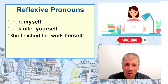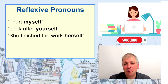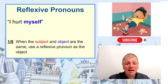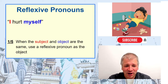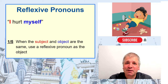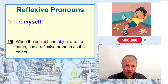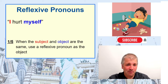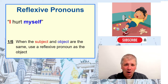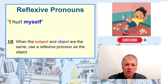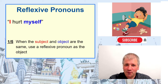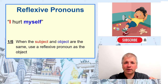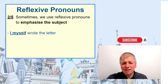For example, 'she finished the work herself.' The first thing to know about reflexive pronouns is that when the subject and object are the same, we use a reflexive pronoun as the object. For example, 'I' is the subject — I am the one who hurt something — but the thing that was hurt was also me, so I become the object as well. In the object position we use the reflexive pronoun: 'I hurt myself,' in other words, me.